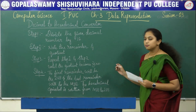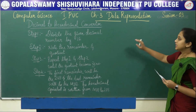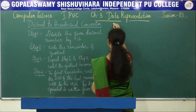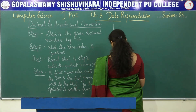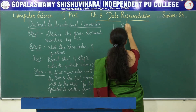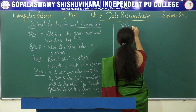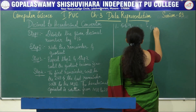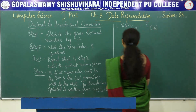Now let's solve some problems based on decimal to hexadecimal conversion. The first problem is 559 base 10. We have to convert it into the hexadecimal number system.